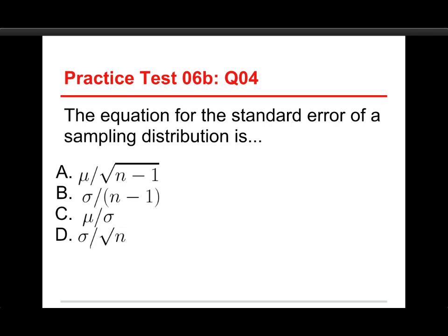Number 4: the equation for the standard error of a sampling distribution is either A, mu divided by the square root of n minus 1; B, sigma divided by n minus 1; C, mu divided by sigma; or D, sigma divided by the square root of n. The answer is D — sigma divided by the square root of n, where sigma is the population standard deviation.